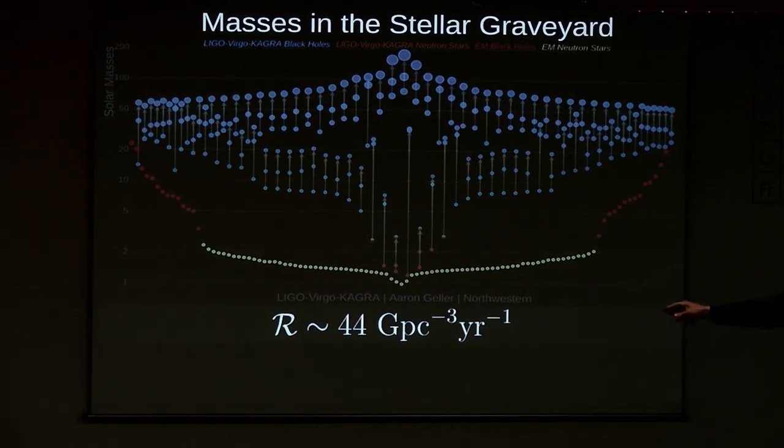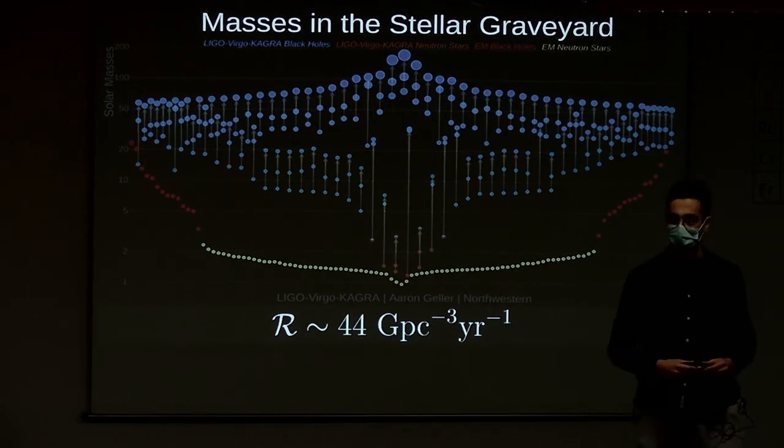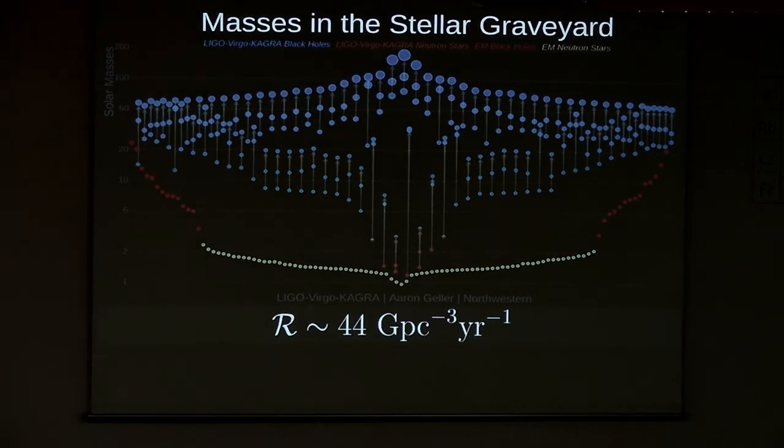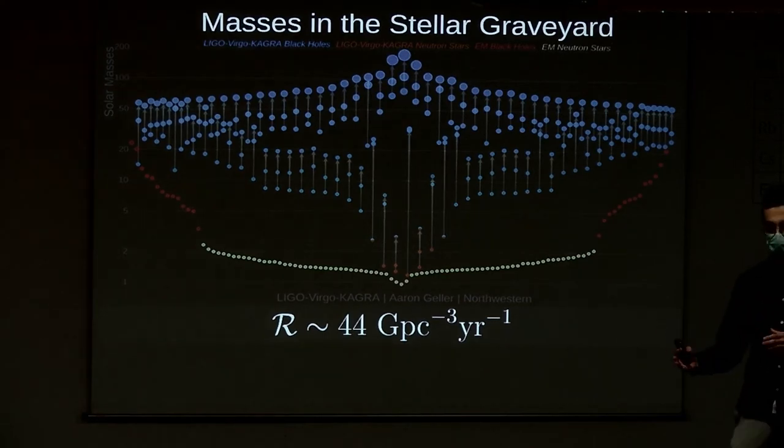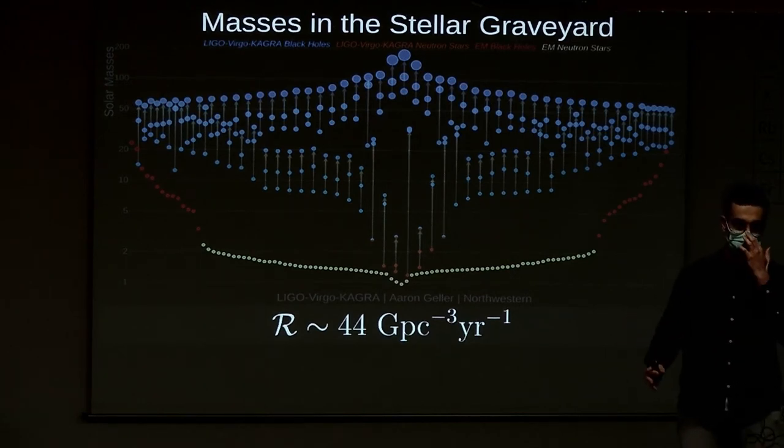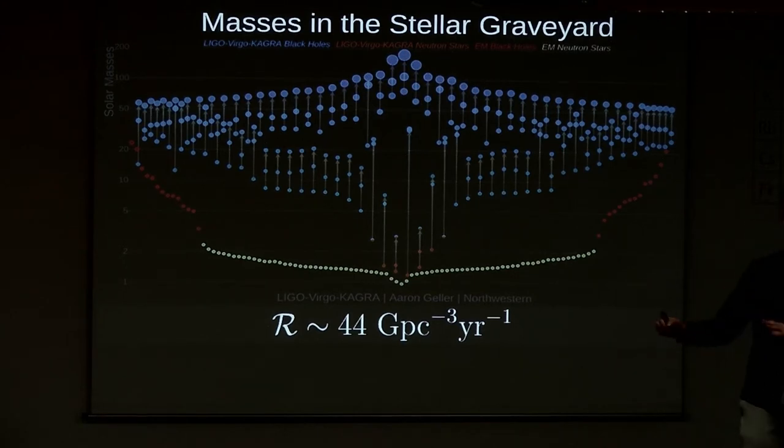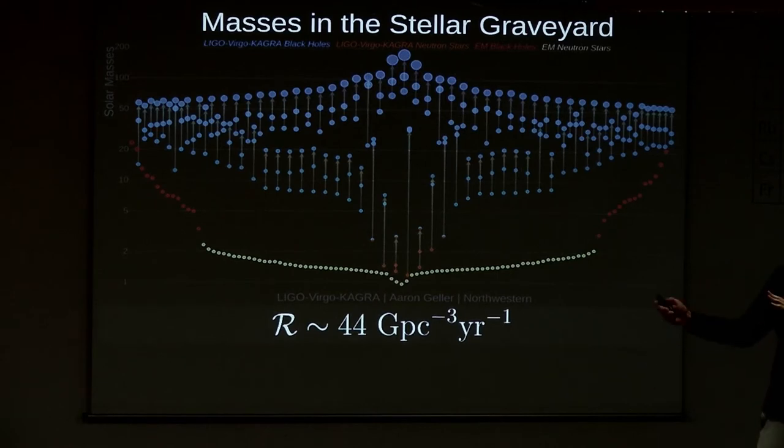For black holes we detect a murder rate of about 44 black hole mergers per cubic gigaparsec per year. This is an extreme amount. As a matter of historical context, when these gravitational wave detectors were first developed, we expected to see mostly binary neutron star mergers, with binary black holes as the least important contribution. This is actually the opposite. The most common process is binary black hole mergers.